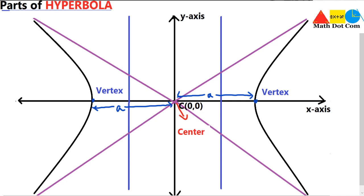It is also the point where the curve of the hyperbola cuts the transverse axis. The transverse axis is indicated by this orange line. The transverse axis basically is the axis that contains the center, and on its endpoints there are the two vertices of the hyperbola.